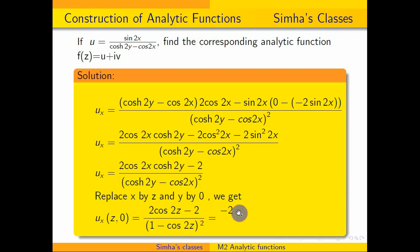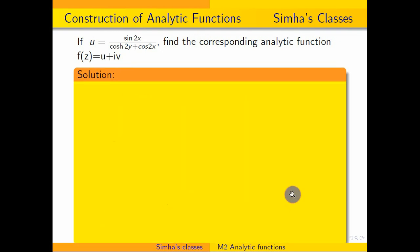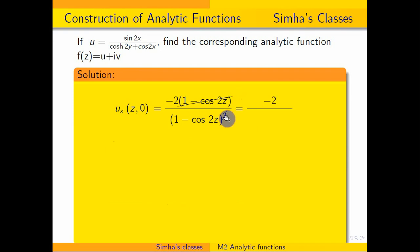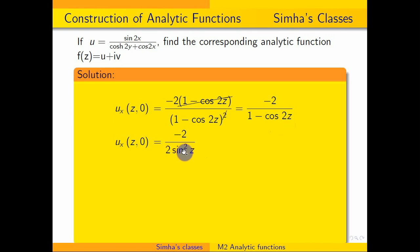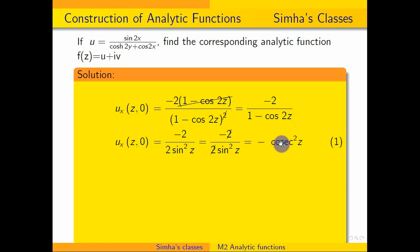In the numerator I am taking minus 2 common: this gives minus 2 times (1 minus cos 2z) divided by (1 minus cos 2z) squared, which simplifies to minus 2 divided by (1 minus cos 2z). Now, 1 minus cos 2z equals 2 sin² z by the trigonometric formula. So minus 2 divided by 2 sin² z — the 2s cancel — giving minus 1 divided by sin² z. We know that 1 over sin² z is cosecant squared z, so ux(z, 0) = −csc² z.